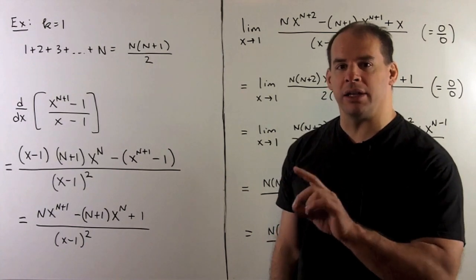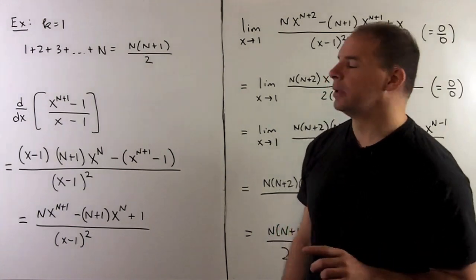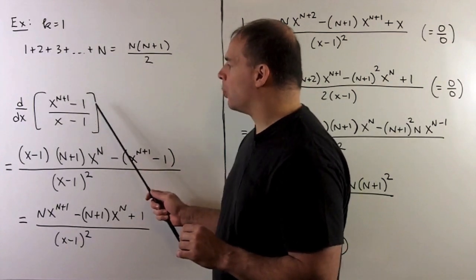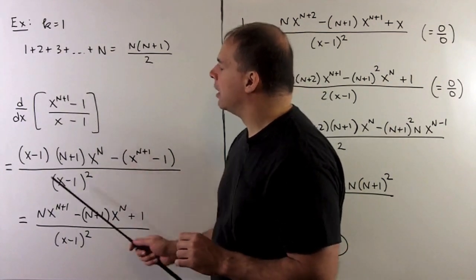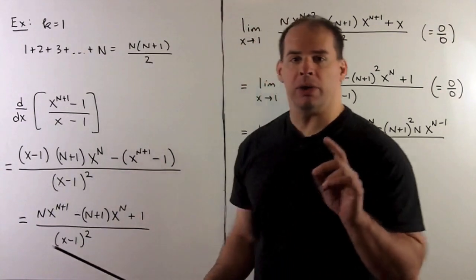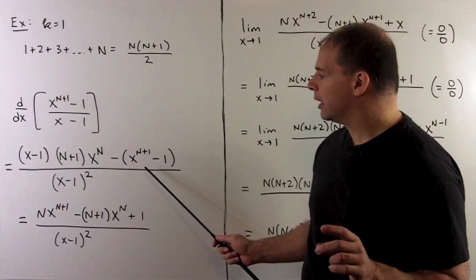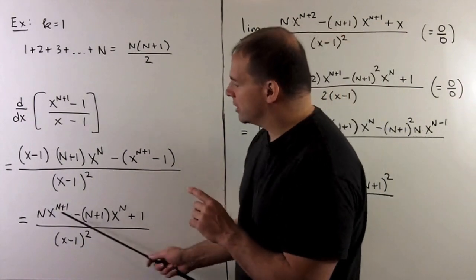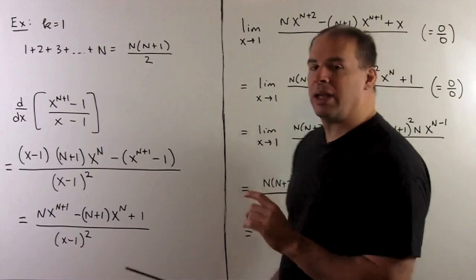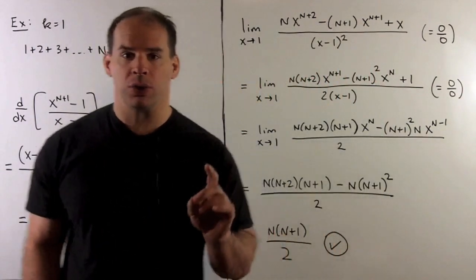Of course we know how to get this formula using much more elementary methods. We just want to verify the recipe in at least one case. So we take x^(n+1) - 1 over (x-1), take the derivative using the quotient rule—low d high less high d low over low squared—then we simplify the numerator a little bit, multiply by x, and then take the limit as x goes to 1.